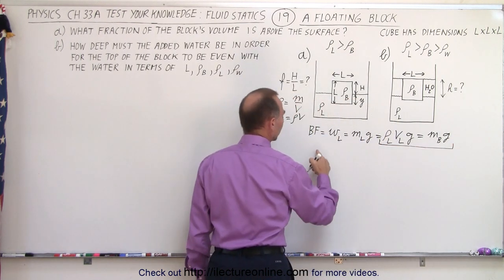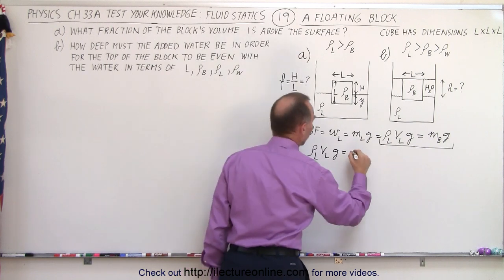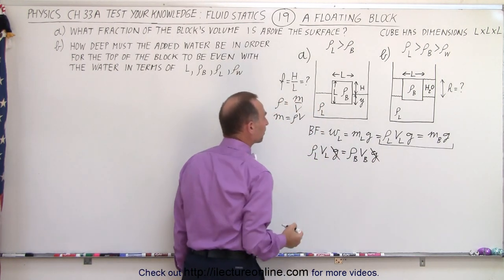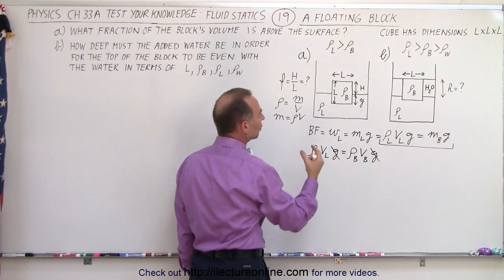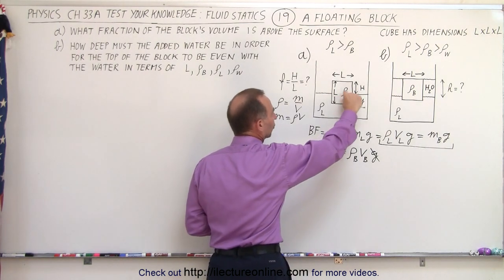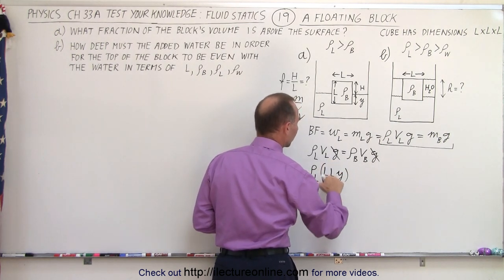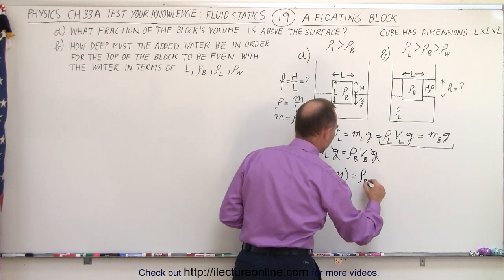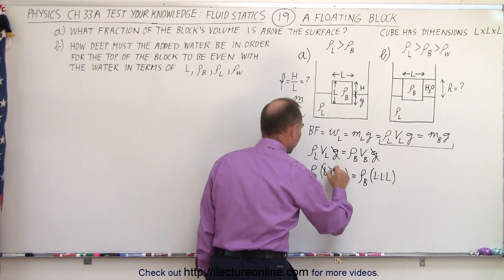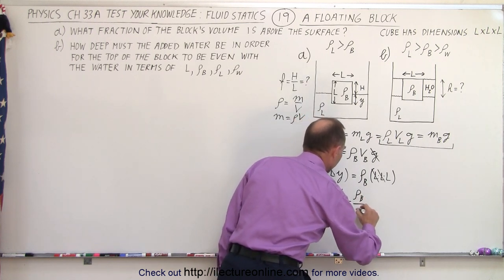Taking this portion of the equation, we write that the density of the liquid times the volume of displaced liquid times g equals the density of the block times the volume of the block times g. The g's cancel on both sides. We want to find H over L, so we start by expressing the displaced volume in terms of Y: density of liquid times L times L times Y equals density of block times L times L times L. Two of the L's cancel on both sides, leaving Y over L equals the density of the block divided by the density of the liquid.